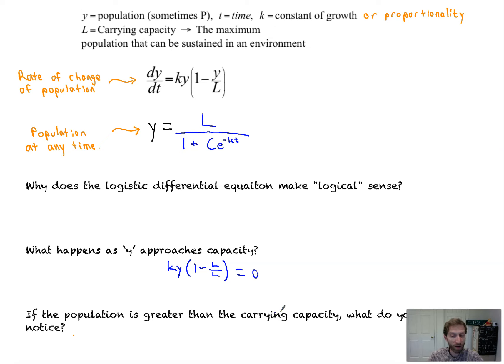If the population's greater than the carrying capacity, what do you notice? If the population's greater than the carrying capacity, so let's pick a number greater than L, like 2L. So 1 minus 2L over L, if we have double the population, ky is positive because y is a positive number, k is positive. 2L over L, that's going to be equal to ky times 1 minus 2. You now end up with a negative value for your derivative, which makes sense. If you exceed the population that an environment can hold, it's going to have to go down. The environment can't sustain that number of people, so there's death.